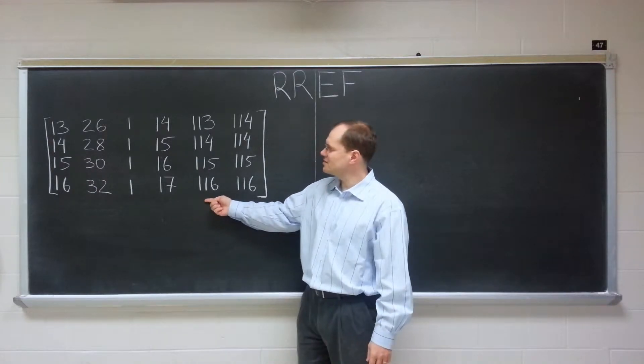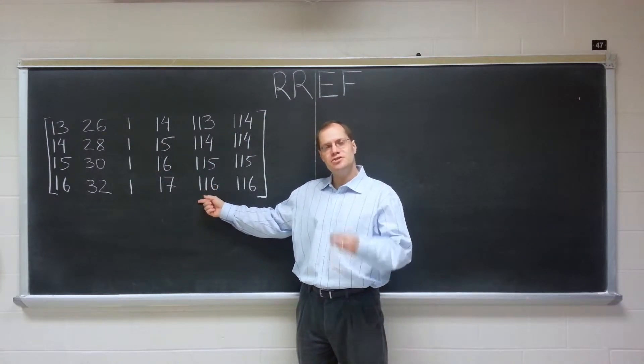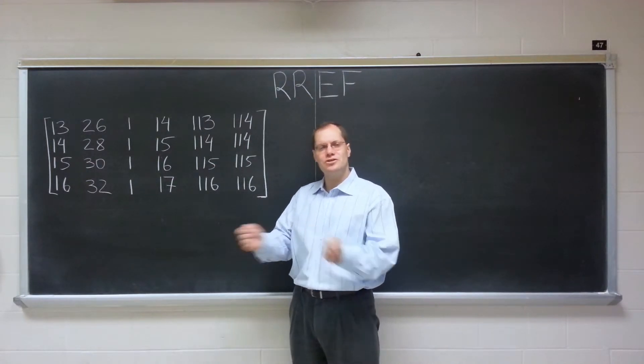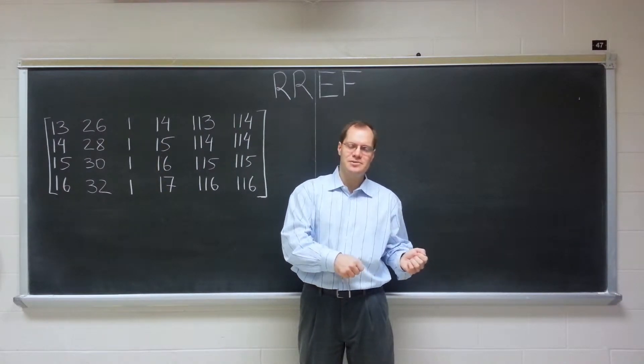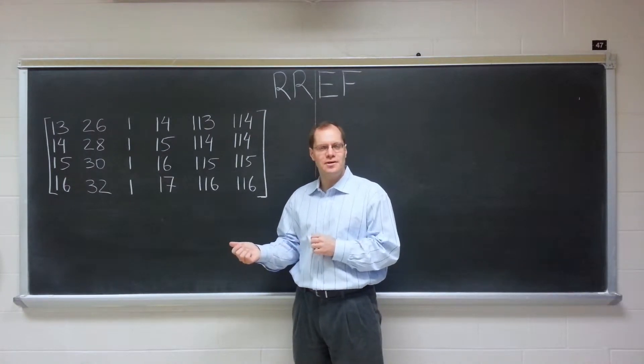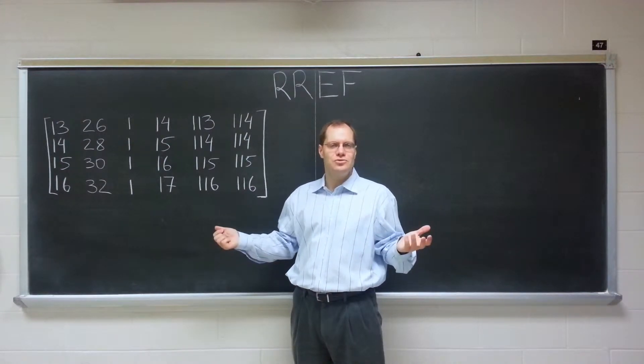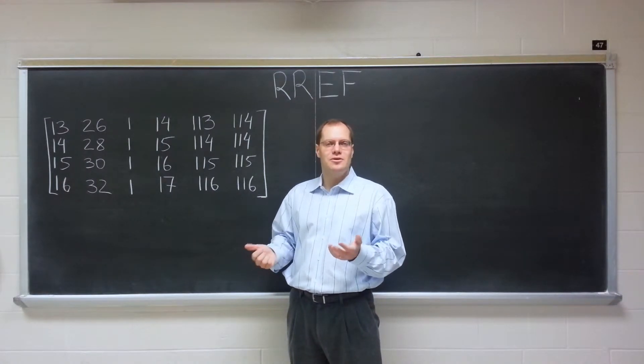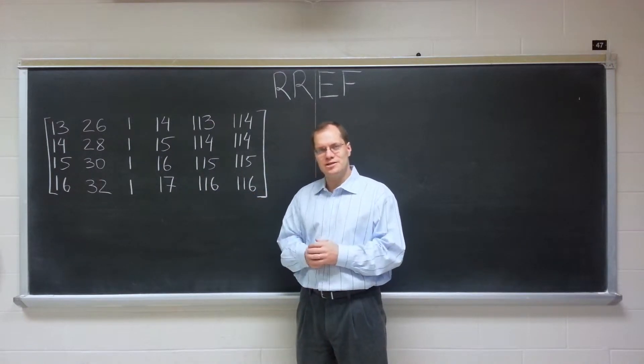Except I think it will help you understand the row reduced echelon form a little bit better. This is kind of an opposite situation. This is a situation where, unless I made some mistake, the relationships among the columns are easy to see. And you'll see in a moment that you can go both ways, from the row reduced echelon form to the relationship among the columns, and also from the relationship among the columns to the row reduced echelon form.